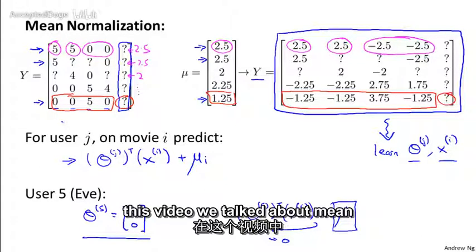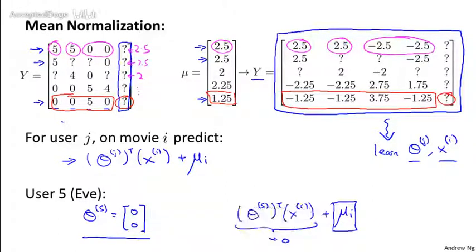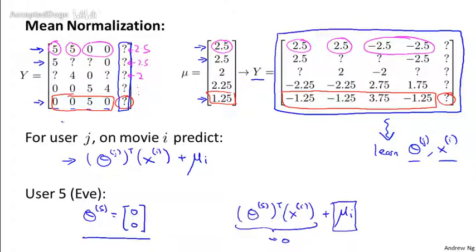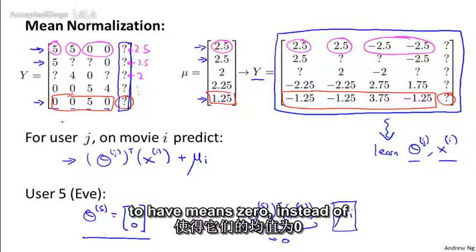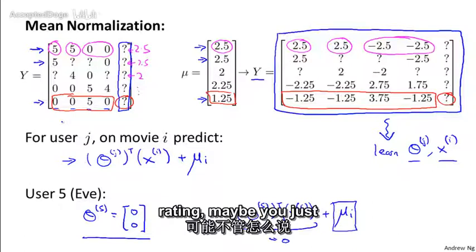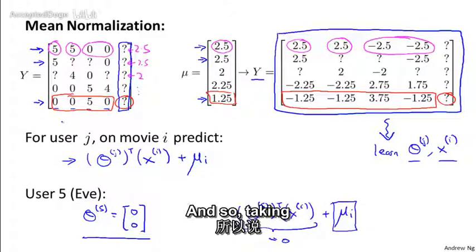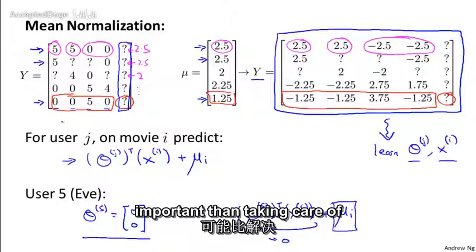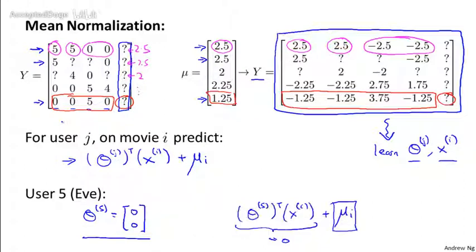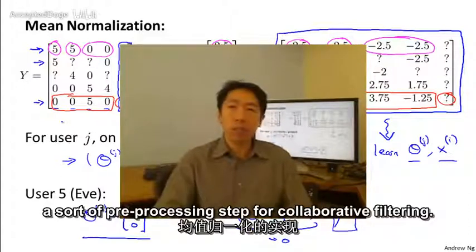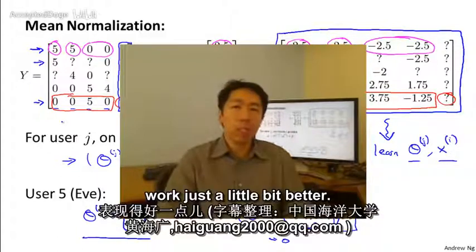Finally, as an aside, in this video we talked about mean normalization, where we normalize each row of the matrix Y to have mean zero. In case you have some movies with no ratings, you can also play with versions of the algorithm where you normalize the different columns to have mean zero instead of normalizing the rows. Although that's maybe less important, because if you really have a movie with no ratings, maybe you just shouldn't recommend that movie to anyone anyway. So to summarize, that's how you can do mean normalization as a preprocessing step for collaborative filtering.